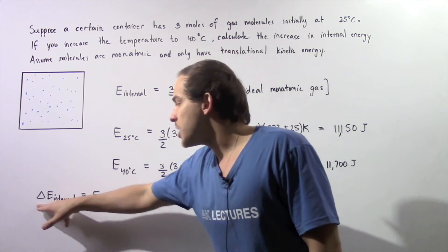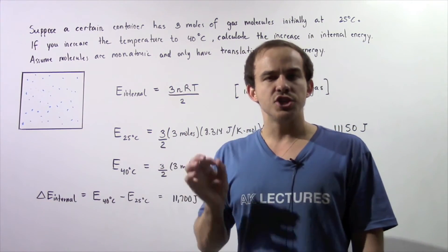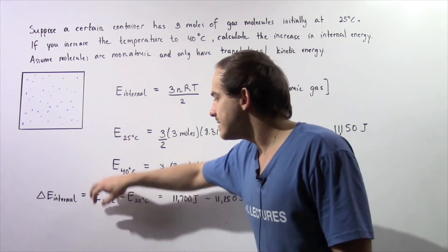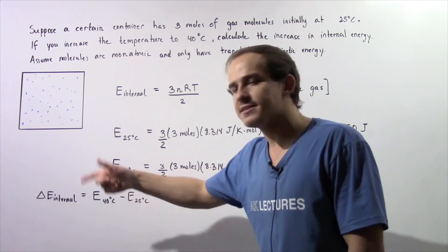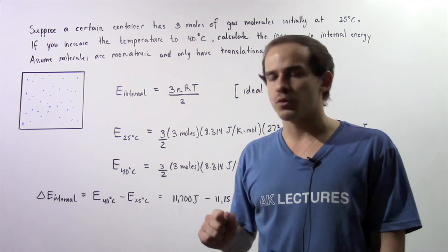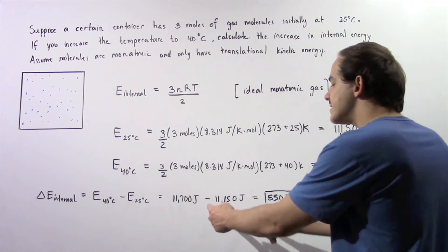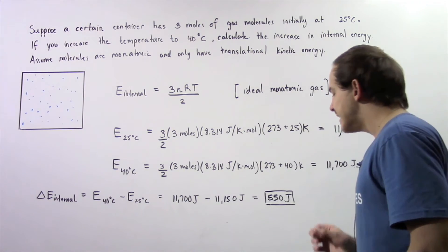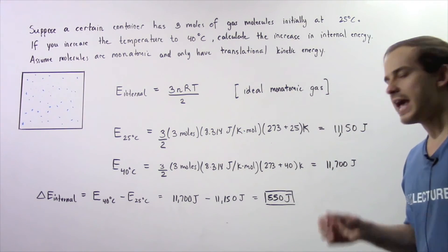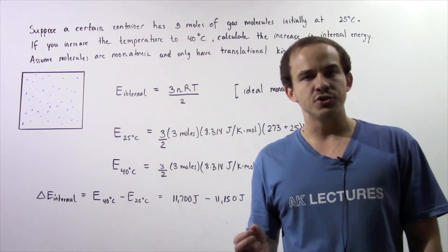So that means the change in internal energy of our system is E at 40 degrees Celsius minus E at 25 degrees Celsius. So we have this quantity minus this quantity and that gives us 550 joules of energy.